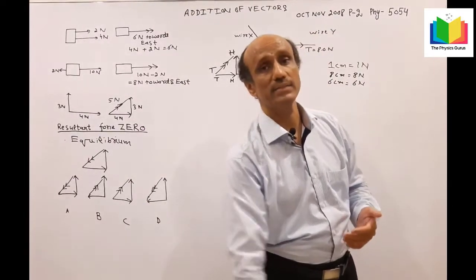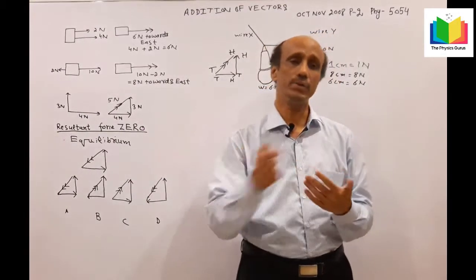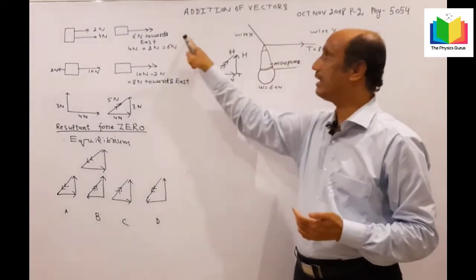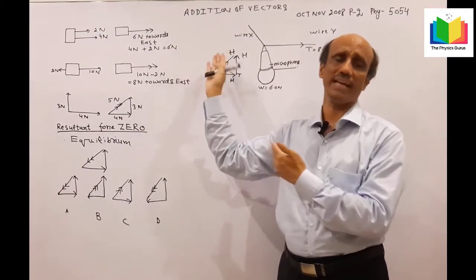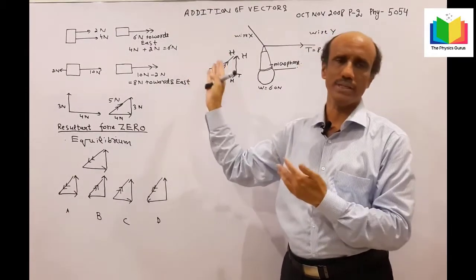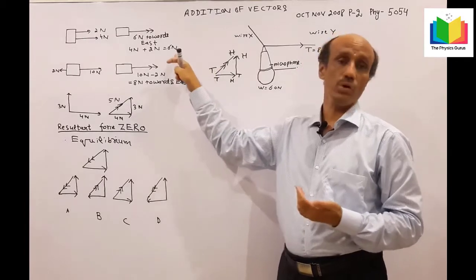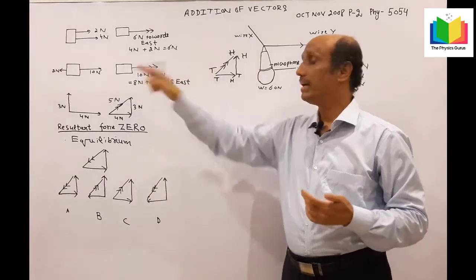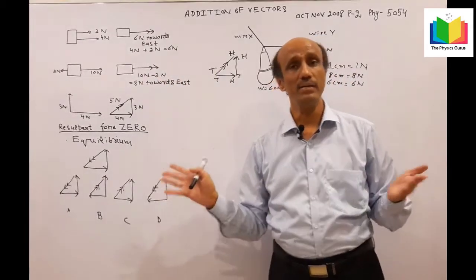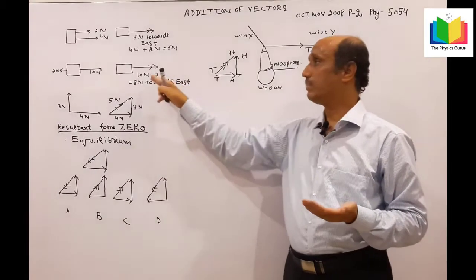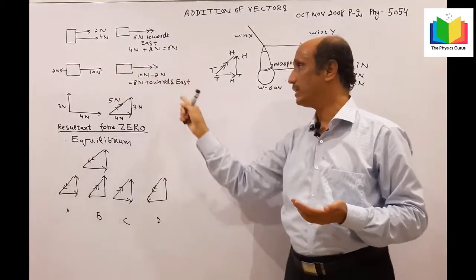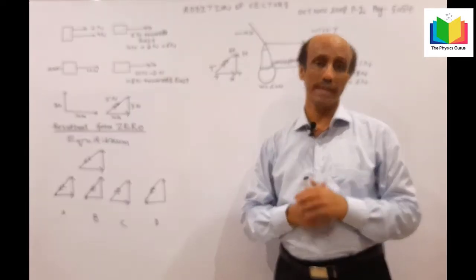If vectors or forces are acting in the same direction, they add up. But if the forces are anti-parallel, then the larger force minus the smaller force will give you the result. For example, if the negative of a vector is minus 2, then it will give you 8 Newtons.